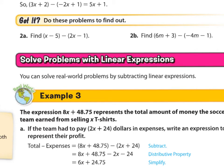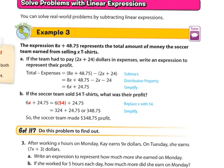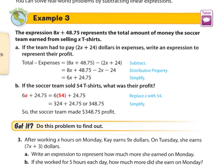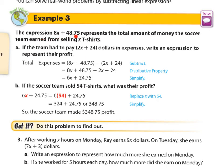Now we're going to apply this to real-world scenarios. The expression 8x plus 48.75 represents the total amount of money the soccer team earned from selling x amount of t-shirts. So they sold them at $8 per shirt, plus $48.75 they made some other way. If the team had to pay 2x plus $24 in expenses, write an expression to represent their profit. This is how much they have in total after all the sales, but we have to subtract what they spent on the merchandise.